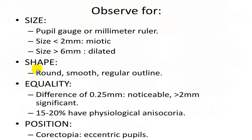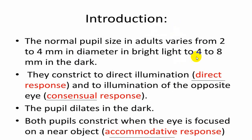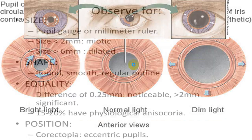We always look for size, shape, equality, and position. Normal size is between 2 mm and 4 mm; maximum dilation is around 6 mm in normal light. In darkness it can dilate up to 8 mm, while in bright light size may be 2 to 4 mm. If the pupil size is markedly less than 2 mm, we call it a miotic pupil; if more than 8 mm, it is called a dilated pupil or mydriasis.